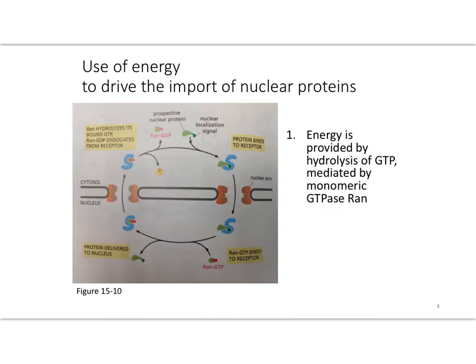What provides the energy for the import of nuclear proteins? The energy is provided by the hydrolysis of GTP, mediated by a monomeric G protein. The GTPase is called RAN. You'll remember other monomeric G proteins such as RAS. We've also talked about Rho and RAC in the context of cell migration. They're a little family — they all start with R and have three-letter designations typical for yeast proteins — and this is a reminder that RAN is a similar protein in terms of function, though it has a very different role here, mediating the import of proteins into the nucleus.